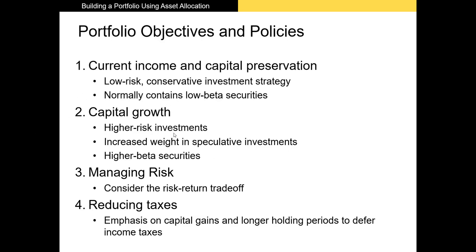Another common portfolio objective is capital growth or capital appreciation, which is more commonly associated with higher-risk investments. We generally consider smaller, more speculative stocks — these stocks are going to have higher betas because there's more market risk associated with them, and more market risk should indicate or predict higher returns.